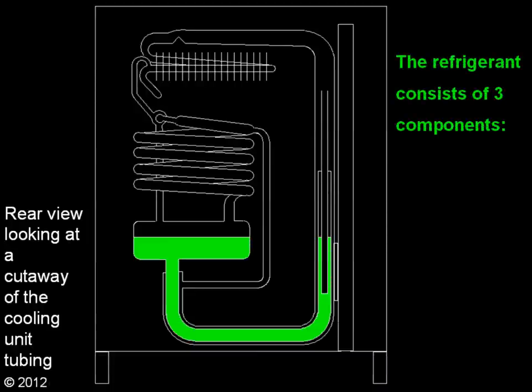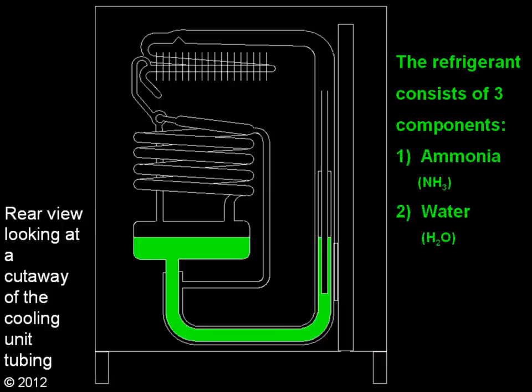This is a rear view of a typical recreational vehicle refrigerator. Green is the refrigerant which is inside cooling unit tubing. The refrigerant consists of three components: ammonia, water, and sodium chromate.